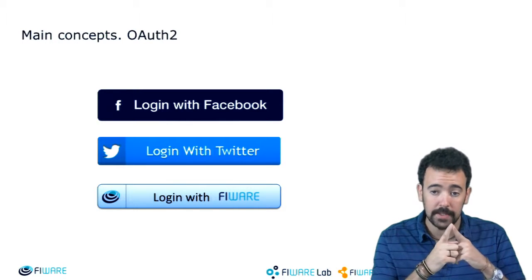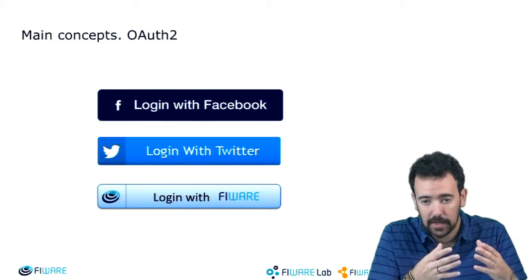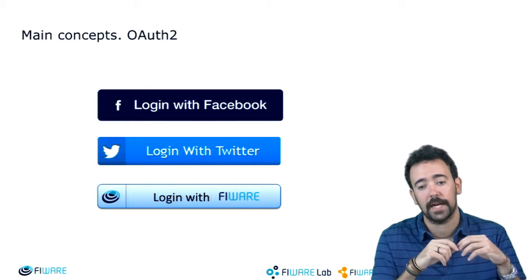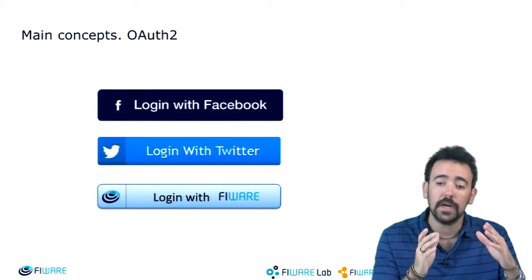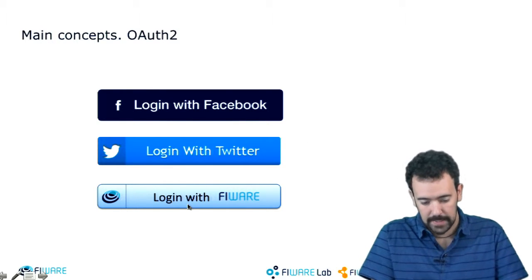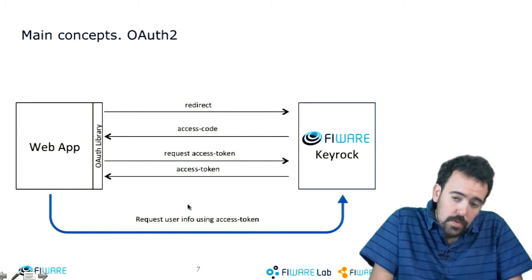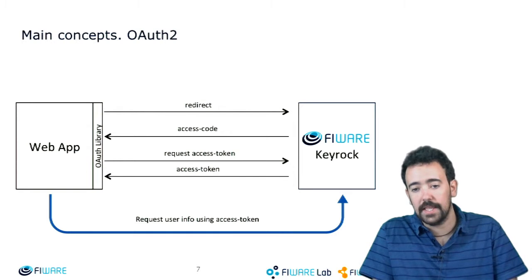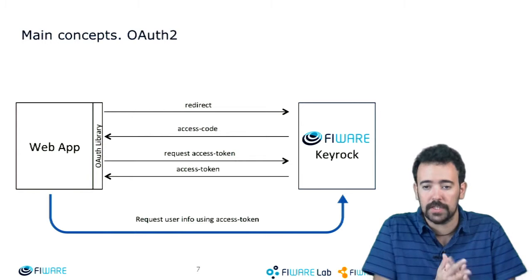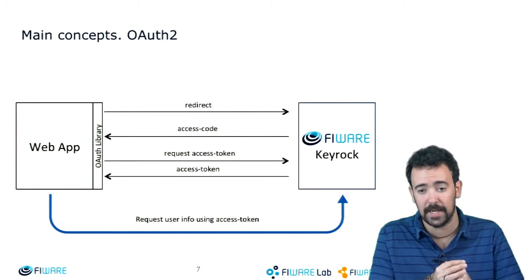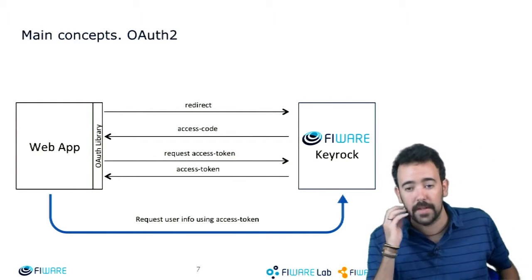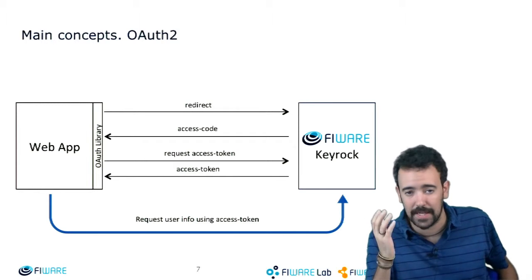In the same way that when you use other applications like the Cloud Portal or the Wirecloud application you are using your account in FIWARE, if you are providing an external application you can include this type of authentication. The architecture of this protocol is something I'm not going to explain in detail in this lesson, but there are several tutorials you can find on the web to understand how the protocol works.